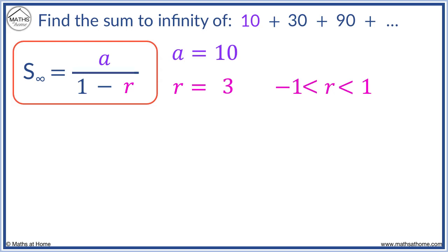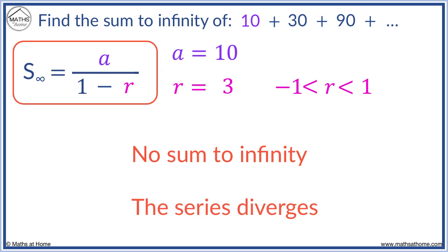However, 3 is too large. We only have a sum to infinity if r is between minus 1 and 1. There is no sum to infinity for this series. This is because the series diverges, which means that the terms get larger each time. As we move from 10 to 30 to 90 and so on, if we kept adding the terms of this sequence, the result would be infinitely large because the terms keep getting bigger.